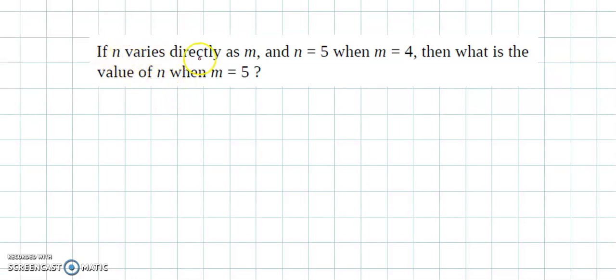If n varies directly as m and n equals 5 when m equals 4, what is the value of n when m is equal to 5?